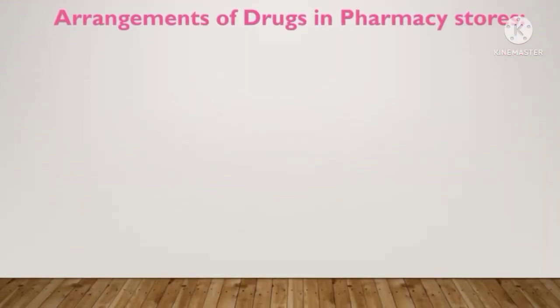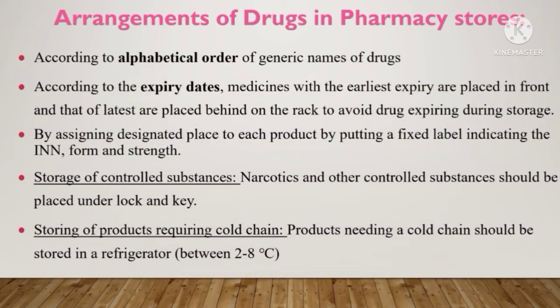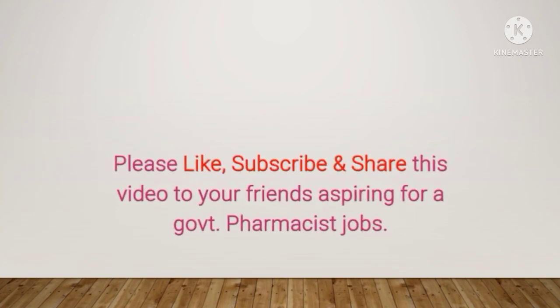The arrangement of drugs in a pharmacy store involves storing them in alphabetical order and according to expiry dates — the earliest expiry drugs should be placed in front and the latest behind. Narcotics and other controlled substances should be stored under lock and key, and products like vaccines and serums that need refrigeration should be kept in a refrigerator between 2 to 8 degrees Celsius.